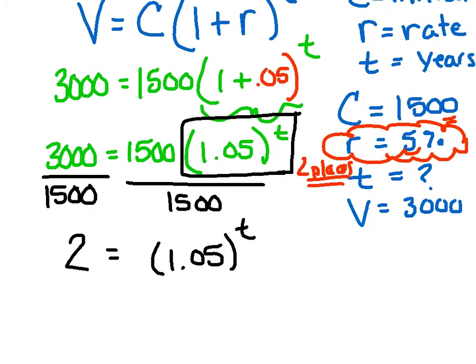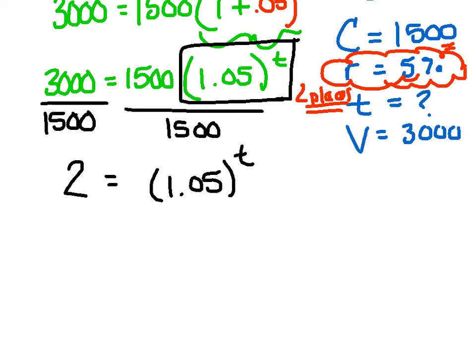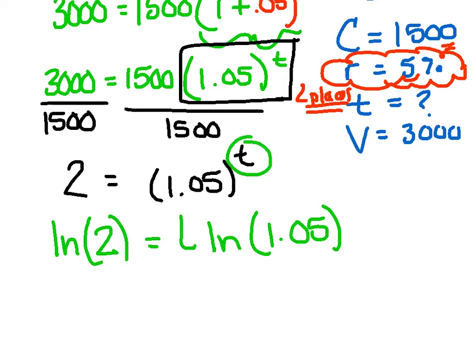So at this point, now that I have my base and variable alone, I'm just going to take the log, the common log or natural log of both sides. And it doesn't matter which one you choose to use. Just remember to be consistent. And when I do that, that's going to take that t and bring it down in front. And now remember, my goal is to get this t by itself. So I'm just going to divide out the ln of 1.05.